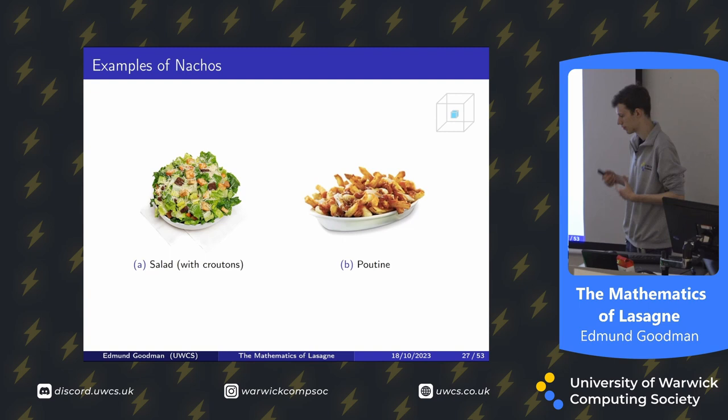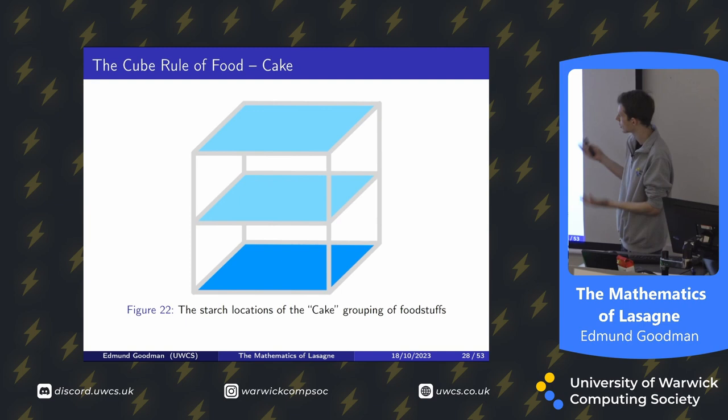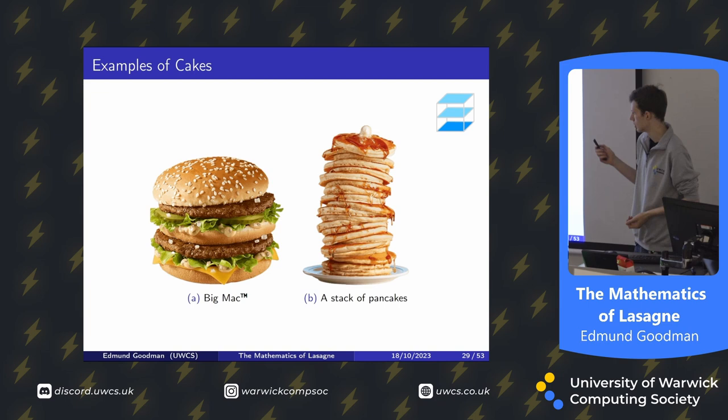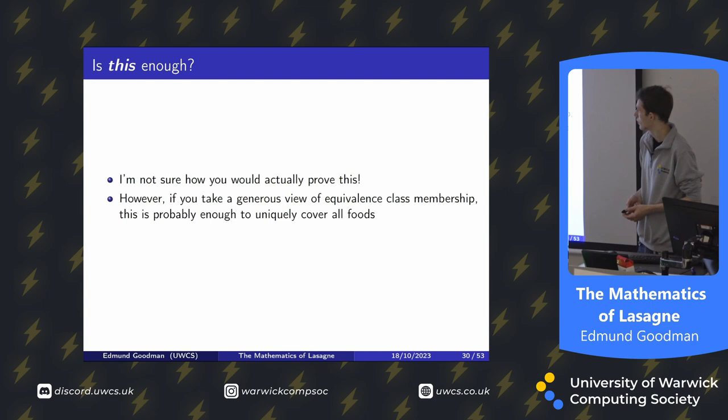Finally, cake — this isn't really an equivalence class, it's more a grouping generally. If you've got more layers than a sandwich, like three or more, you'd call it cake — so a Big Mac or a stack of pancakes are cakes. Is this enough? I don't know how you'd actually prove this is enough, but if you take a generous view of equivalence class membership and treat nachos as a bit of a catch-all, it probably works.